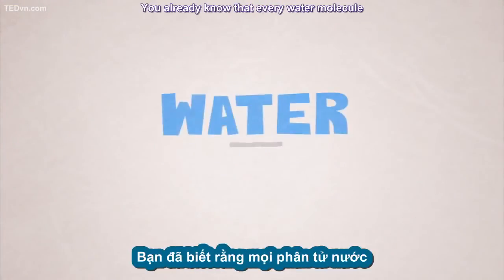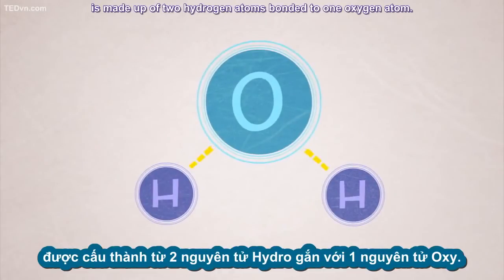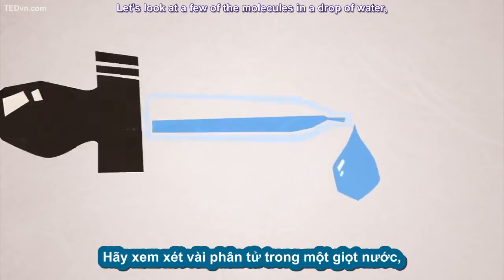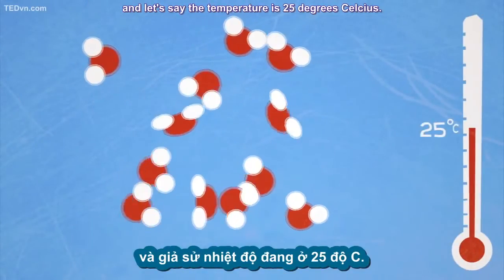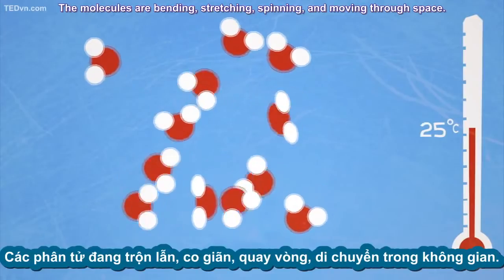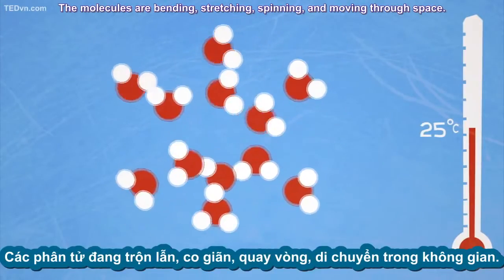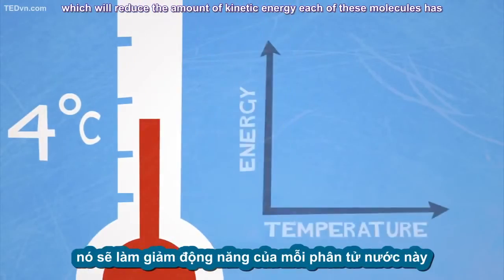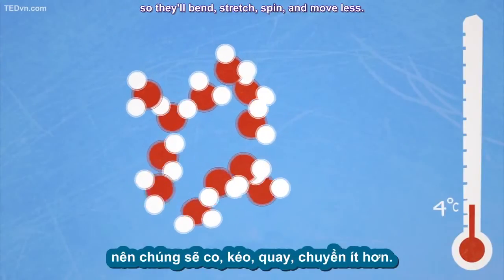Every water molecule is made up of two hydrogen atoms bonded to one oxygen atom. Let's look at a few of the molecules in a drop of water at 25 degrees Celsius. The molecules are bending, stretching, spinning, and moving through space. Now, let's lower the temperature, which will reduce the amount of kinetic energy each of these molecules has — so they'll bend, stretch, spin, and move less.